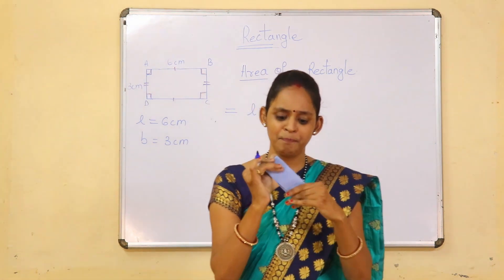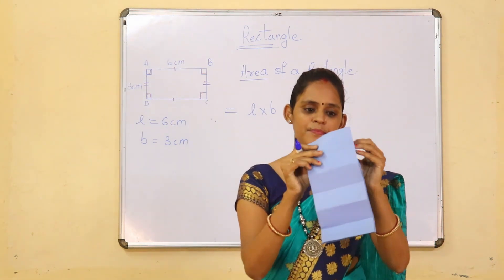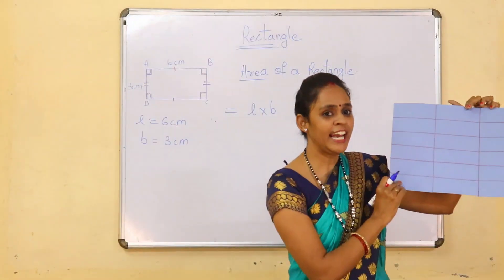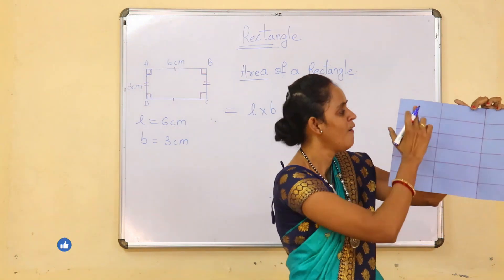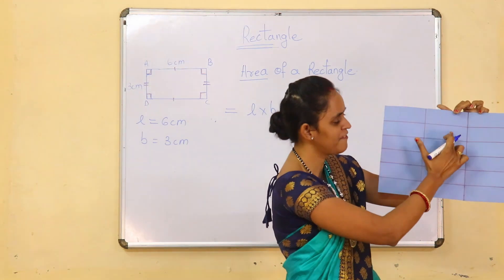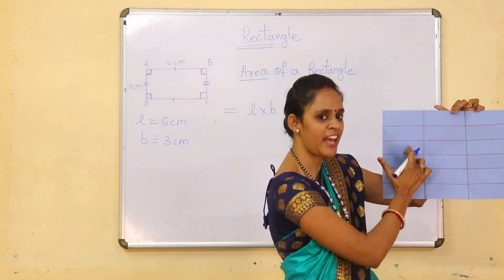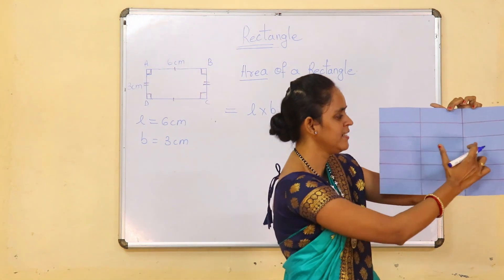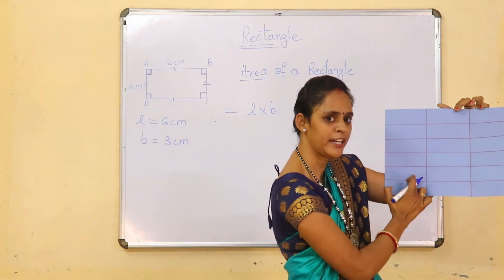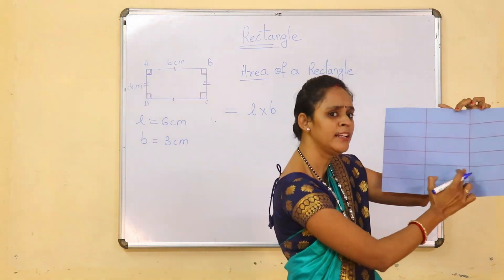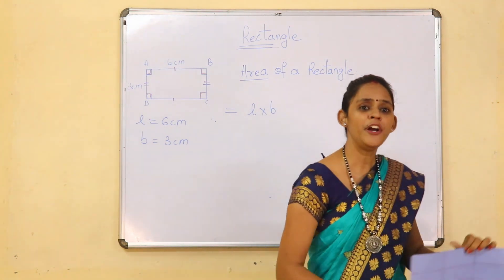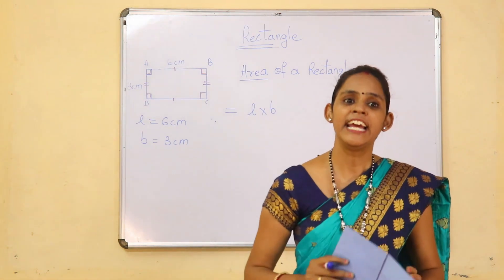Now I am going to open this. We can calculate these boxes: 1, 2, 3, 4, 5, 6, 7, 8, 9, 10, 11, 12, 13, 14, 15, 16, 17, 18. So the area of rectangle is 18.